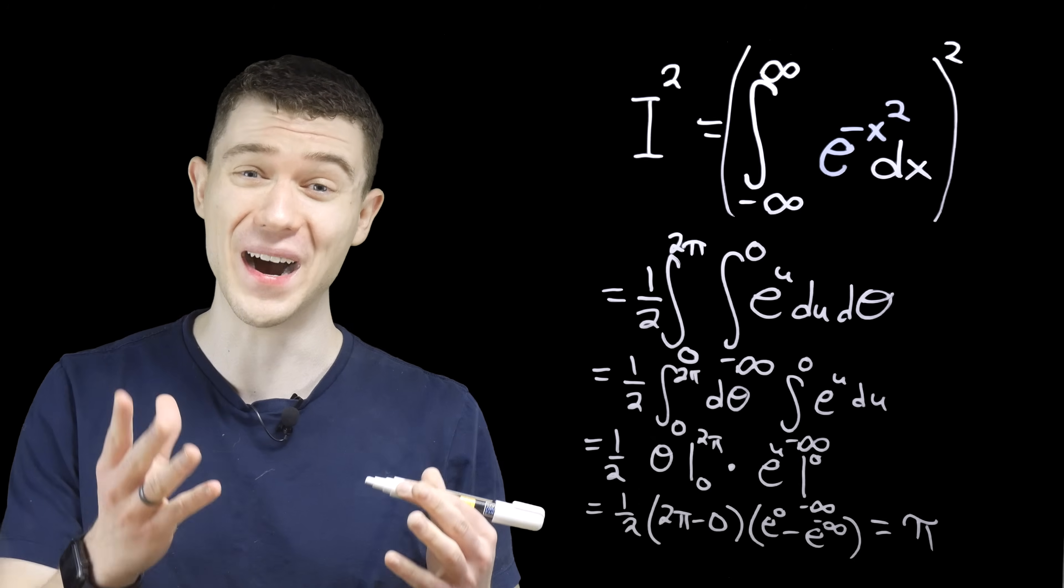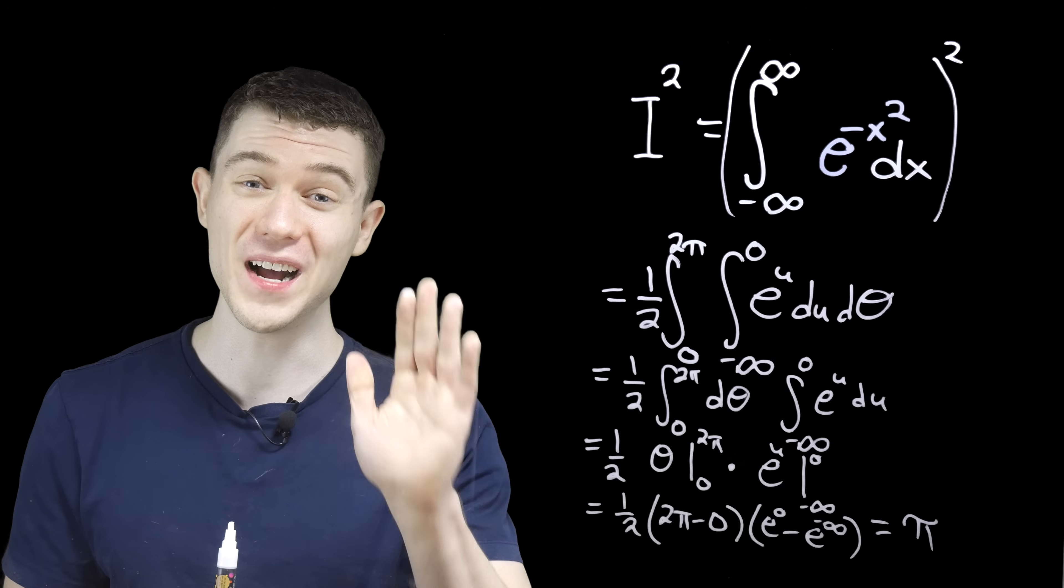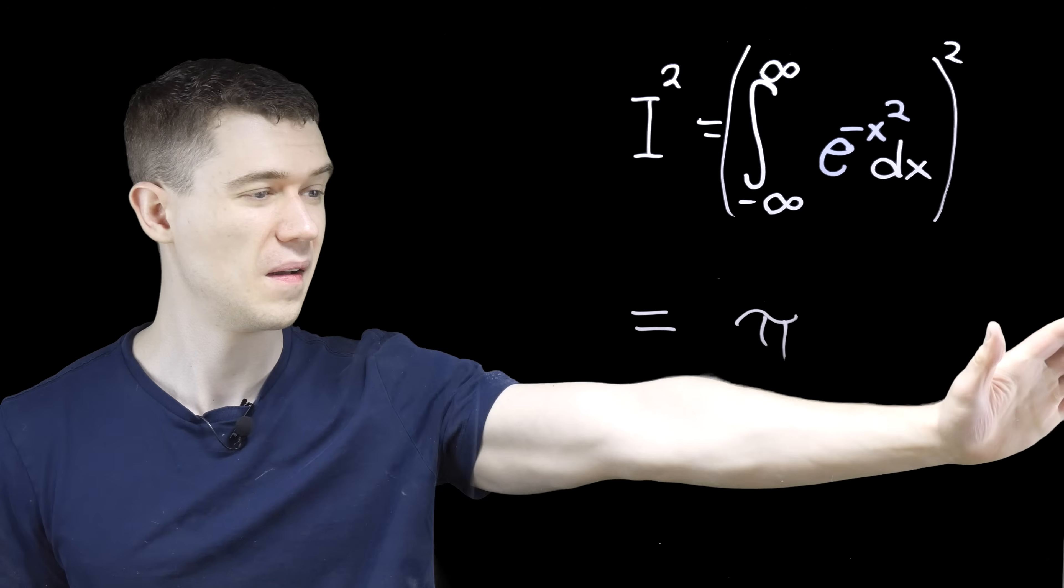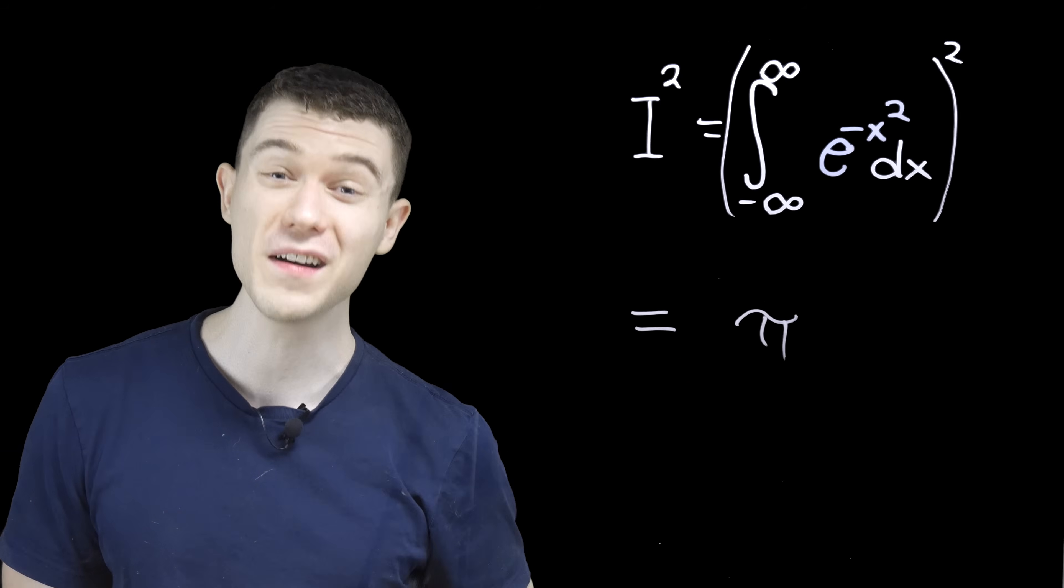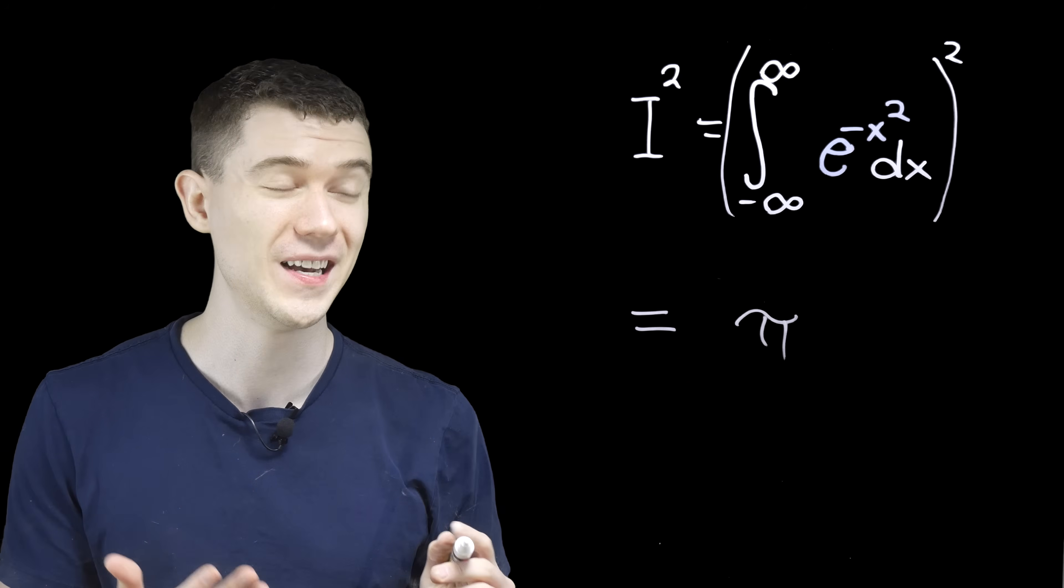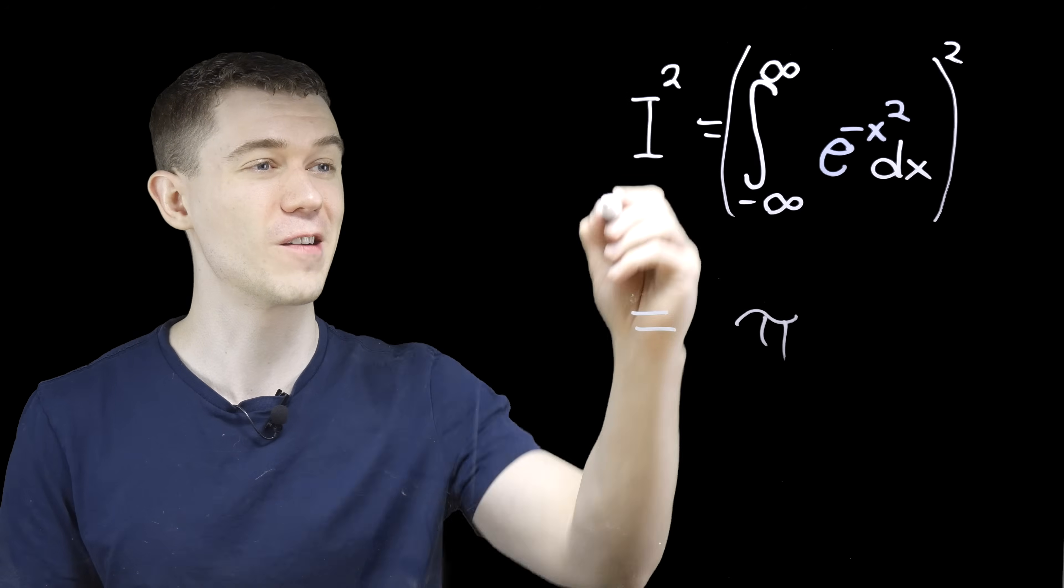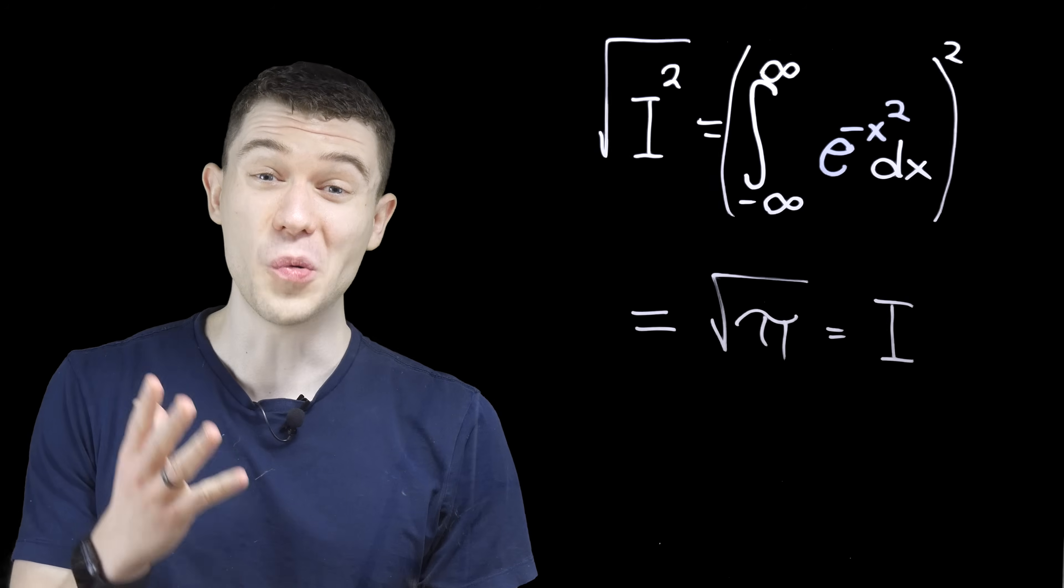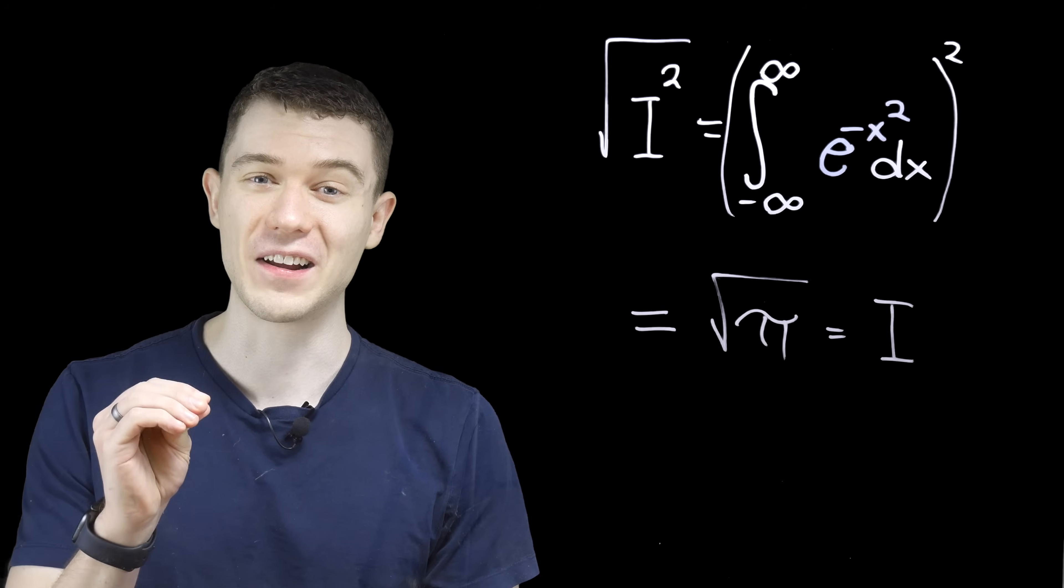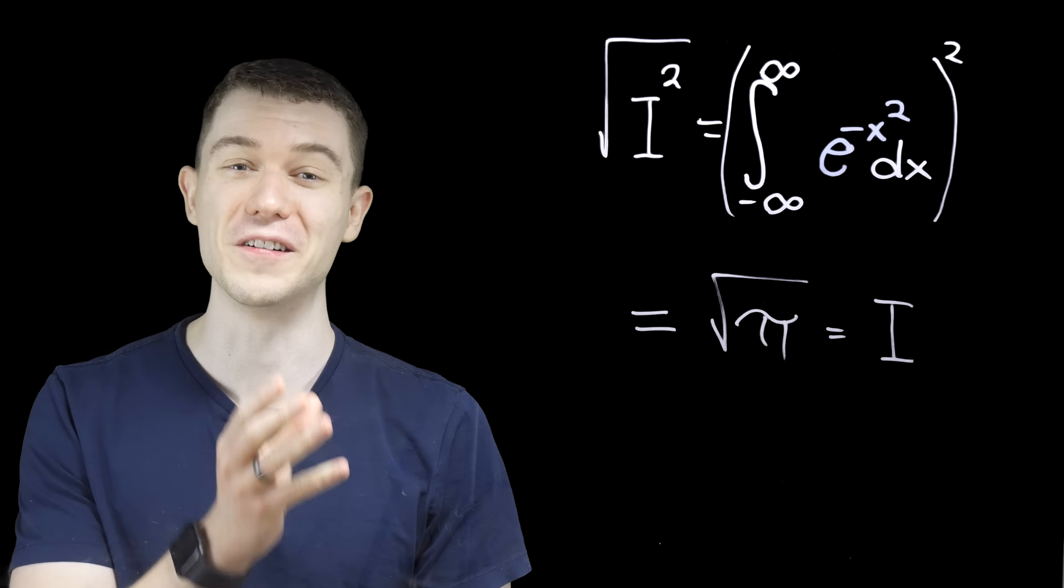Wow, did you expect a pi to fall out of here? And we're not quite done yet. Because if this equals pi, this was the square of what we actually wanted. So really, if we take the square root of both sides, well, we'll get what we want. We'll get our original integral. Quite amazing that the area under that curve is square root of pi.